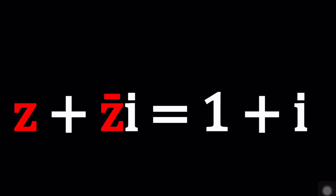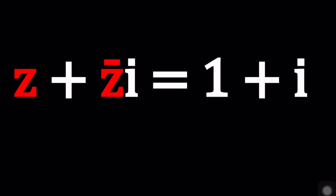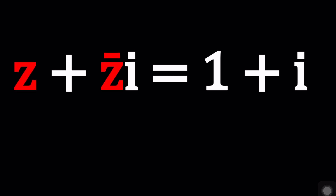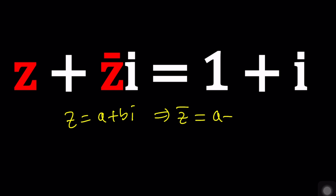We have Z plus Z̄·i equals 1 plus i. What is Z̄? Z̄ is the complex conjugate. Z equals A plus Bi is a complex number — and it's also the name of this channel. If Z is defined as A plus Bi, then Z̄, the complex conjugate, is defined as A minus Bi. Basically you negate the imaginary part.